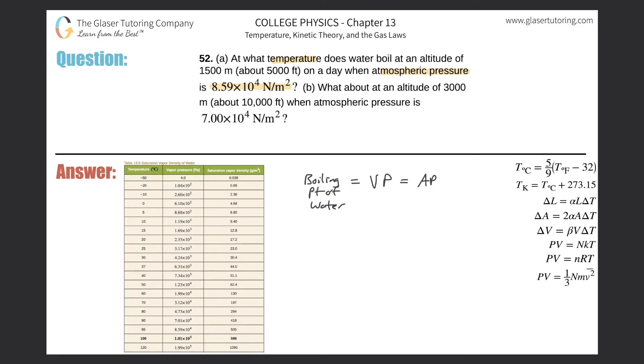For letter A here, we're talking about an atmospheric pressure of 8.59 times 10 to the fourth. So we go to our table, we scroll all the way down to here, we realize the value is exactly right there. So the corresponding temperature will now be the boiling point. This value right here, 95 degrees Celsius, will be the boiling point.